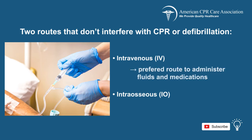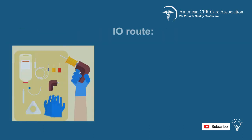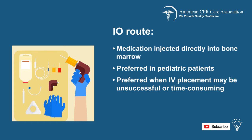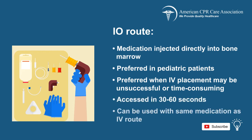The IV route is the most approved route when it comes to administering fluids and medications in patients. With the IO route, medications are injected directly into the bone marrow. IO access can be used in patients of all ages, but it is preferred in pediatric patients or when IV placement may be unsuccessful or time consuming, thereby delaying critical medication. The IO route can be accessed in 30 to 60 seconds and can be used with any medication that is used in the IV route.